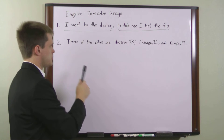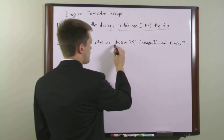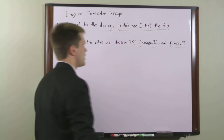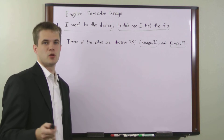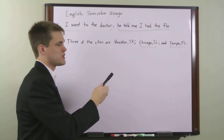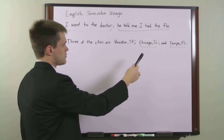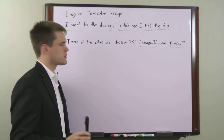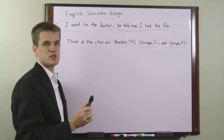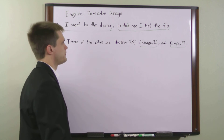The second example is items in a list. As you can see here, we've got three items — they are city-state combinations. The proper way to list out cities and states is city comma state, so each item has an internal comma. It could be confusing to try to separate them with commas, so the proper usage in this instance is to use a semicolon to separate each of them.